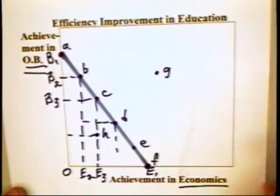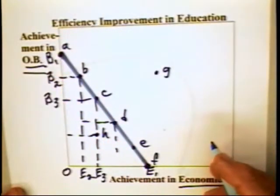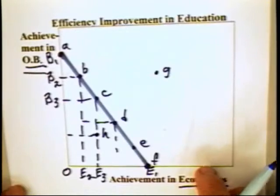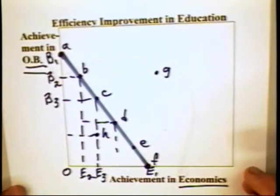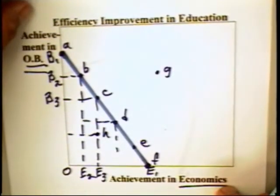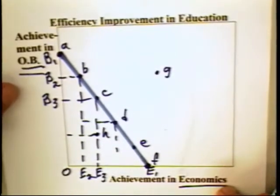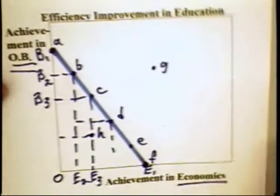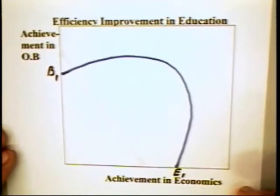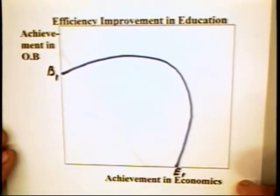You may wonder why we draw the curve downward — there's always a trade-off. We do that, for the most part, simply for a matter of simplicity of drawing. But there can be some interaction between the study of organizational behavior and the study of economics, such that the production possibility curve is bowed out.